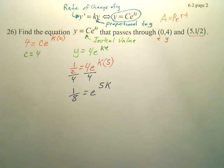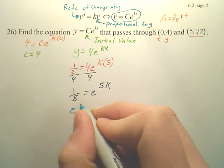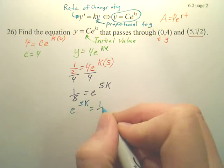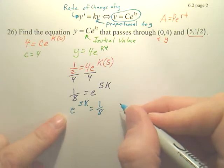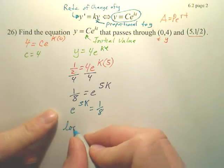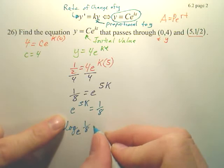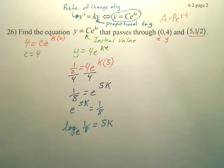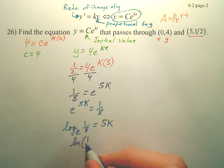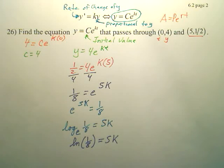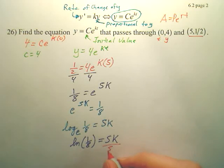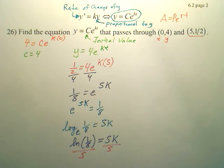Now if I want to change this to a log, I'm going to first write it like this. It's easier to look at it this way in order to change it to a log. And the way you change it to a log is it's going to be log base e of 1/8 equals 5k, which is ln(1/8) equals 5k. And we can divide by 5. And that could be k.